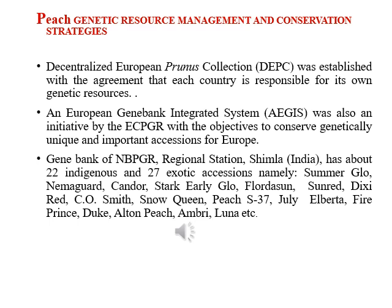Here we will discuss genetic resource management and conservation strategies for peach. The Decentralized European Prunus Collection (DEBC) was established with the agreement that each country is responsible for its own genetic resources. The European Gene Bank Integrative System (AEGIS) was also an initiative by ECPGR with the objective to conserve genetically unique and important accessions for Europe. The gene bank of NBPGR Regional Station Shimla, India, has about 22 indigenous and 27 exotic accessions, namely Summer Glow, Nemagard, Candor, Stark Early Glow, Redhaven, Sun Red, Dixie Red, Cosimet, Snow Queen, Peach S37, July Alberta, Fire Prince, Duke, Elton Peach, Umbria, Luna, etc.